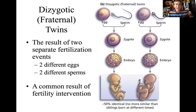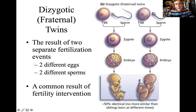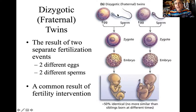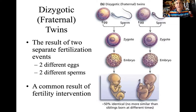They can possibly share the same placenta — sometimes they do, sometimes they don't. The whole point here is everything worked normally; nothing split apart. The issue was simply that multiple eggs were ovulated — two eggs were ovulated. And again, there's a lot of sperm present. So this is the situation that gives us dizygotic or fraternal twins.